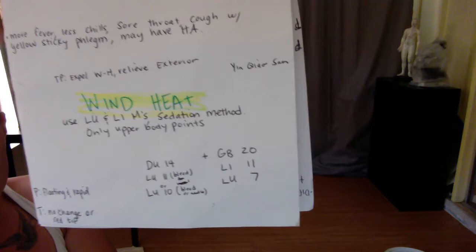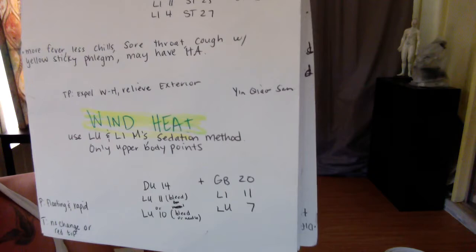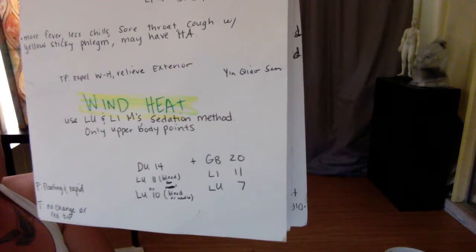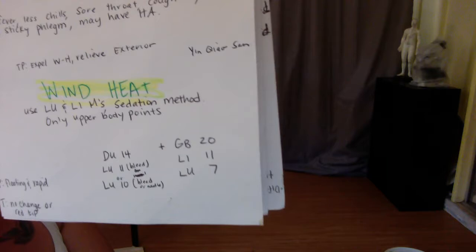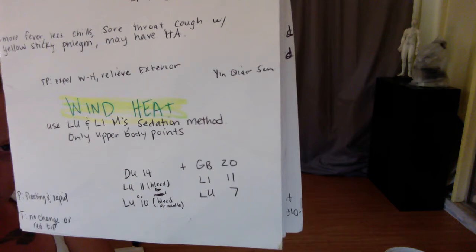Wind heat: more fever, less chills, sore throat with yellow sticky phlegm, may have headache. The pulse is rapid and floating. Tongue has no change or red tip.